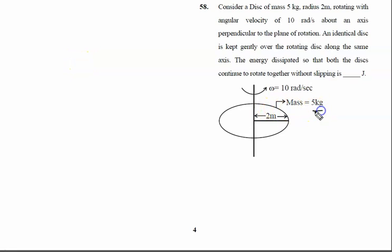Consider a disk of mass 5 kg, radius 2 m, rotating with angular speed 10 radian per second about an axis perpendicular to the plane of rotation. An identical disk is kept gently over the rotating disk along the same axis. The energy is dissipated so that both disks continue to rotate together.